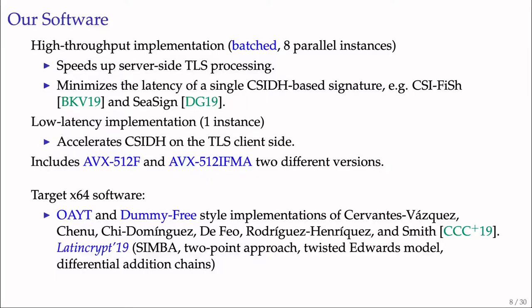The latency-optimized implementation accelerates CSIDH on the TLS client side. Each implementation includes AVX-512F and AVX-512IFMA versions. The target x64 software we're optimizing is the LATICS CRYPT-19 implementation. In this presentation, we focus on the OAYT-style implementation.